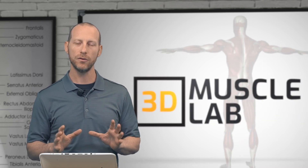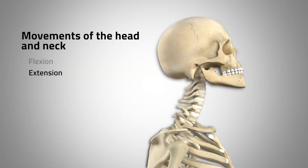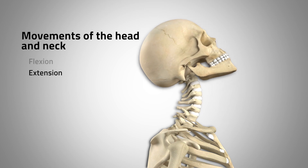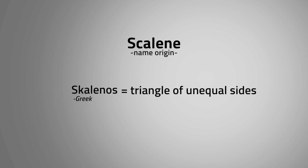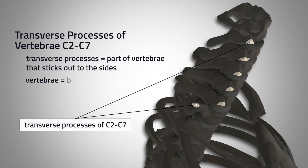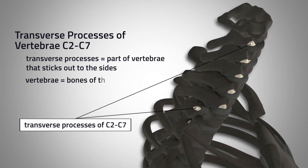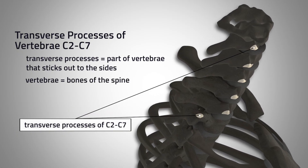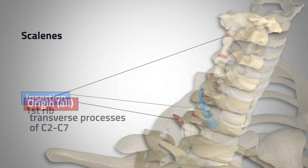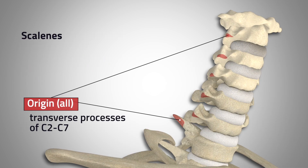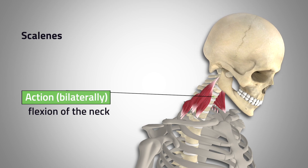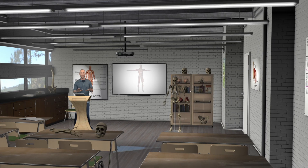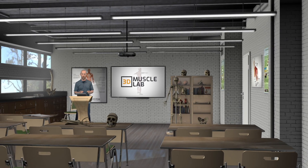For each muscle, we will point out what joint or body part it moves, learn as much as we can about the muscle by deconstructing its name, see and learn the important bony landmarks that are related to the muscle and its attachments to the skeleton, and we'll use 3D models to see the muscle doing its actions. Alright, I think it's time to get started.